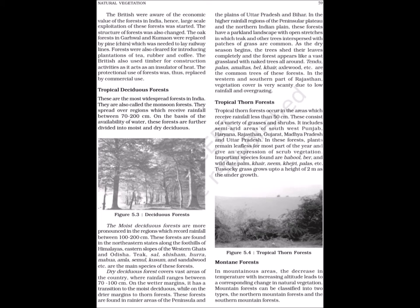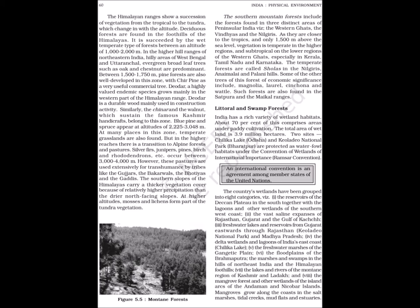In mountainous areas, the decrease in temperature with increasing altitude leads to a corresponding change in natural vegetation. Mountain forests can be classified into two types: the northern mountain forests and the southern mountain forests. The Himalayan ranges show a succession of vegetation from the tropical to the tundra, which changes with the altitude. Deciduous forests are found in the foothills of the Himalayas. It is succeeded by the wet-temperate type of forests at an altitude of 1000 to 2000 meters. In the higher hill ranges of northeastern India, hilly areas of West Bengal and Uttaranchal, evergreen broadleaf trees such as oak and chestnut are predominant.